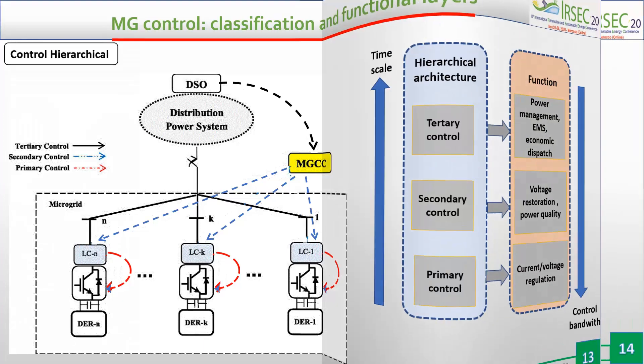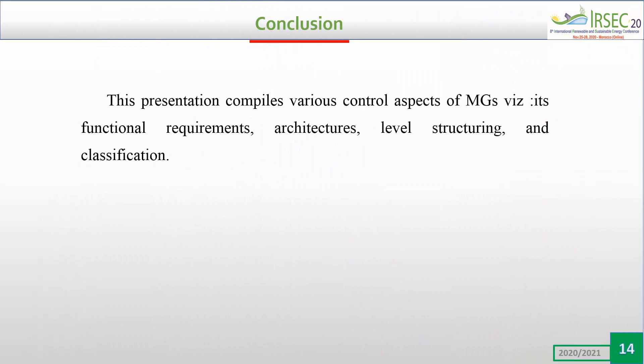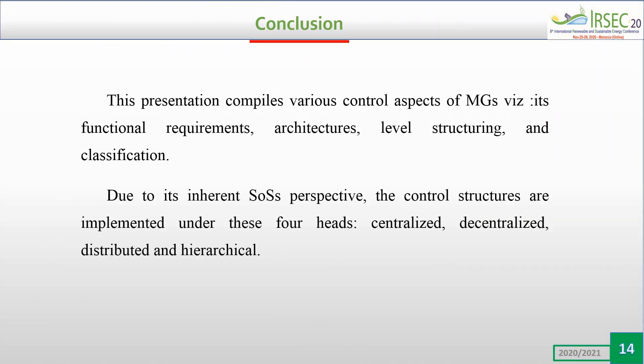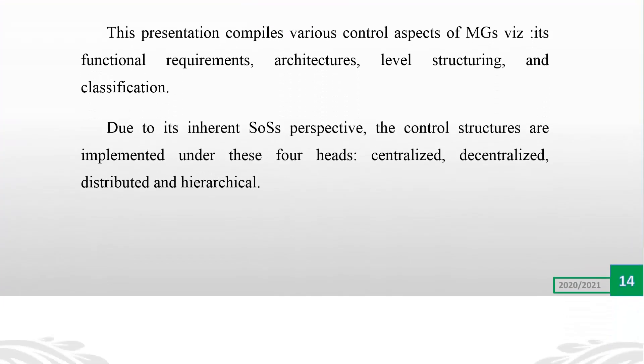This presentation compiles various control aspects for microgrid devices, including their functional requirements, architecture, structures, and classification. Due to its inherent complexity from a system perspective, the control structures are implemented across these four categories. Thank you.